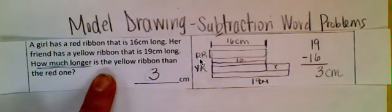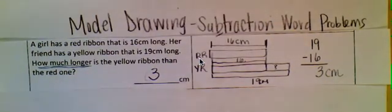3 centimeters longer than the red ribbon, and that's how you do the model drawing for subtraction.